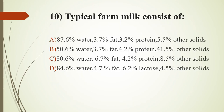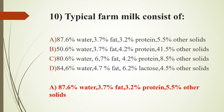Tenth question: typical farm milk consists of — option A, 87.6% water, 3.7% fat, 3.2% protein, 5.5% other solids; option B, 50.6% water, 3.7% fat, 4.2% protein, 41.5% other solids; option C, 80.6% water, 6.7% fat, 4.2% protein, 8.5% other solids. The answer is option A: 87.6% water, 3.7% fat, 3.2% protein, and 5.5% other solids.